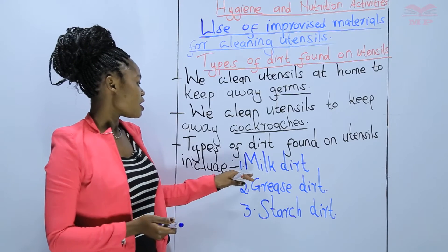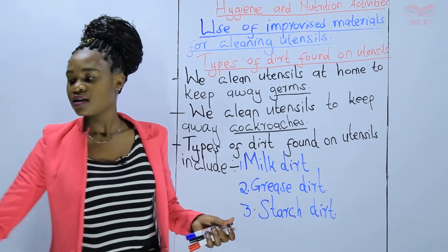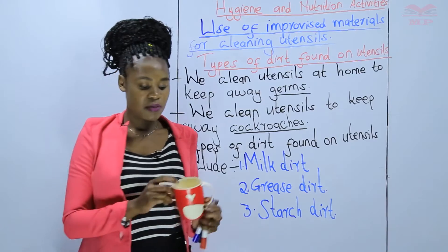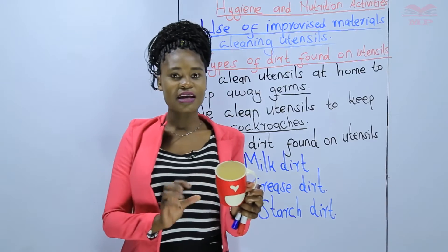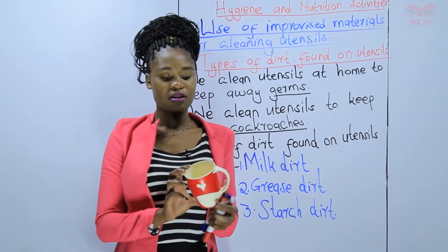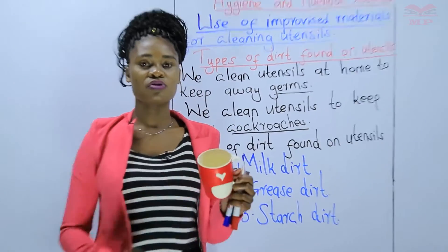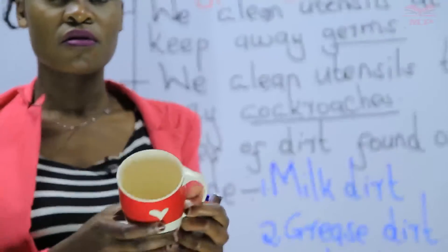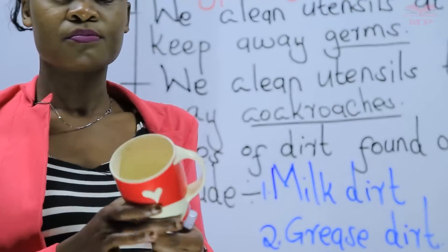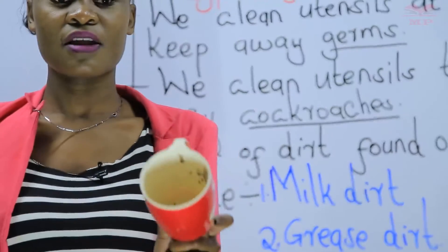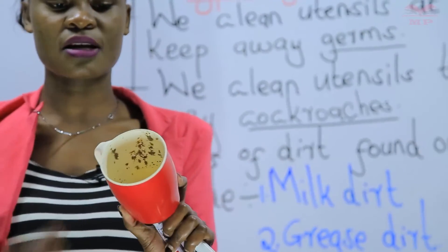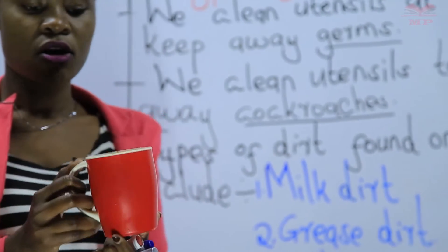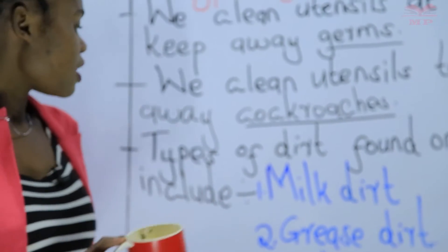The first one is milk dirt. This is an example of milk dirt — this cup was used to drink tea and therefore there are remains of the tea. So, this one is milk dirt.